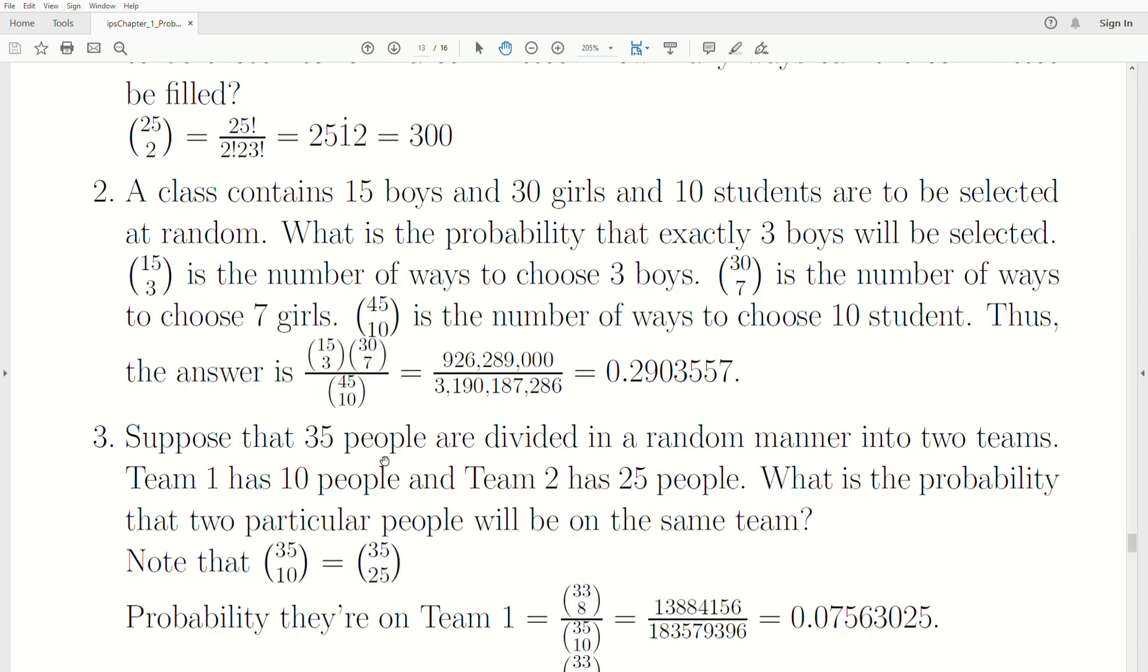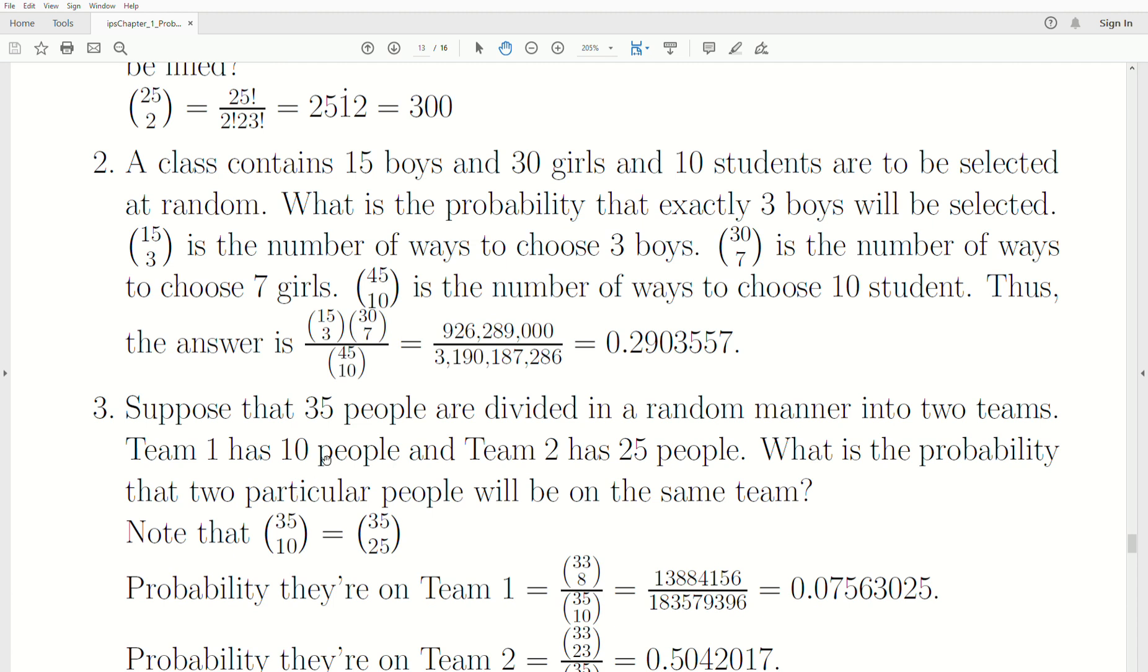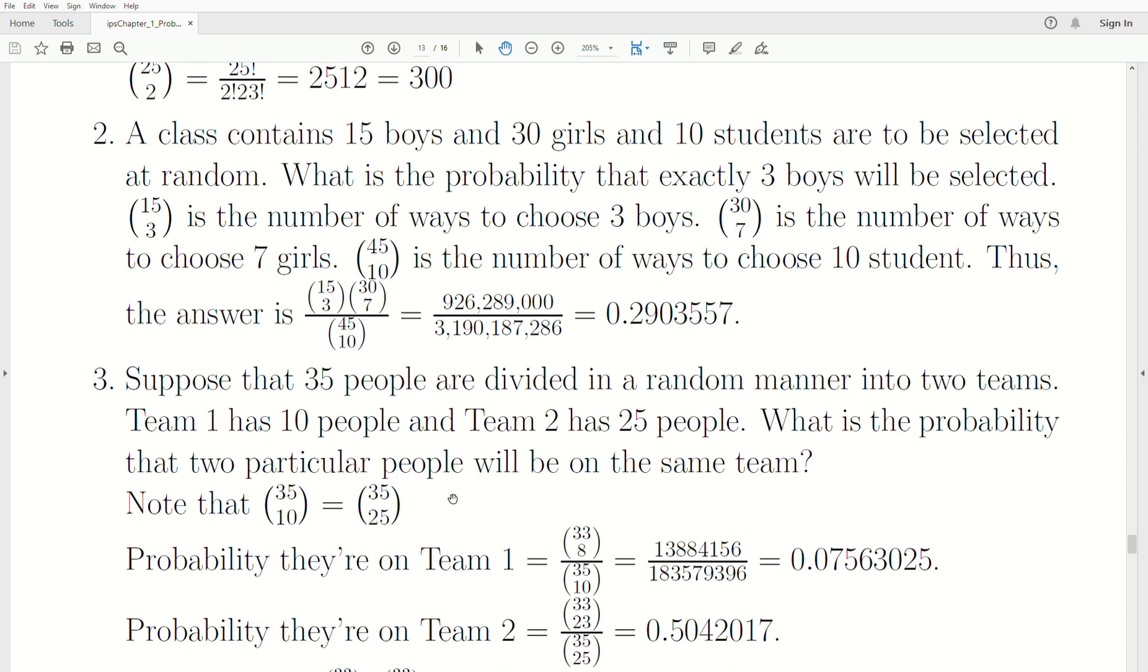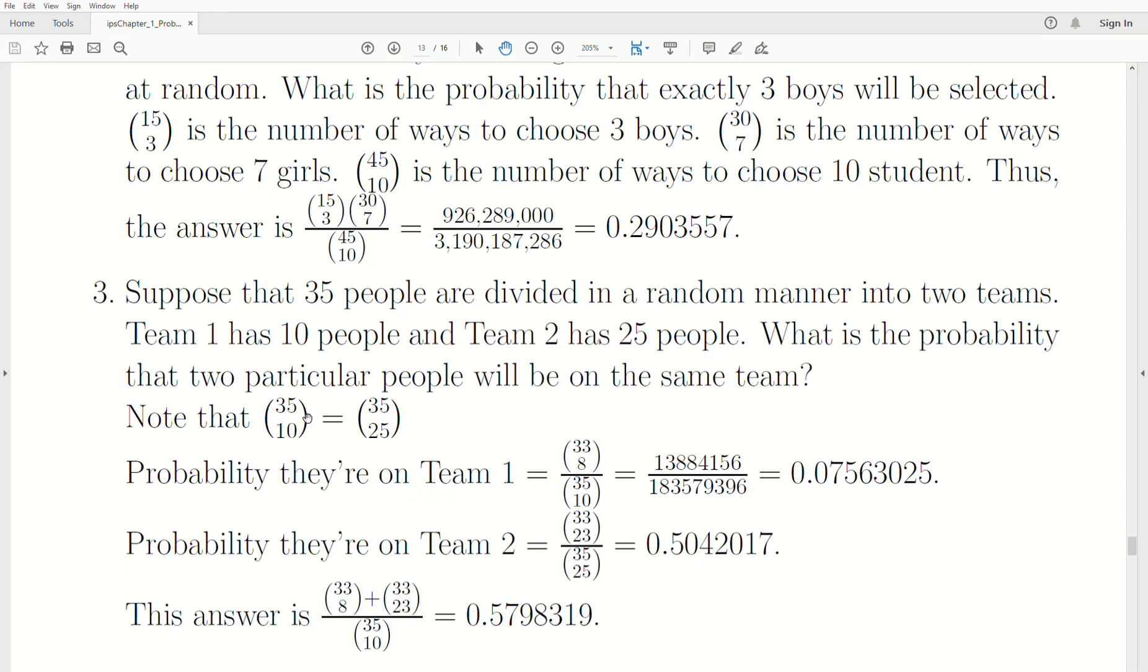Suppose that 35 people are divided in a random manner into two teams. Team 1 has 10 people and team 2 has 25 people. What is the probability that two particular people will be on the same team? Now, before we start, I want to note that 35 choose 10 is equal to 35 choose 25. They're symmetric.